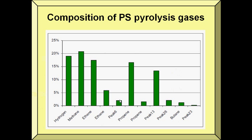For the composition of PS pyrolysis gases, we have hydrogen, methane — which has the highest percentage — then ethane, ethylene, propane, and butane.